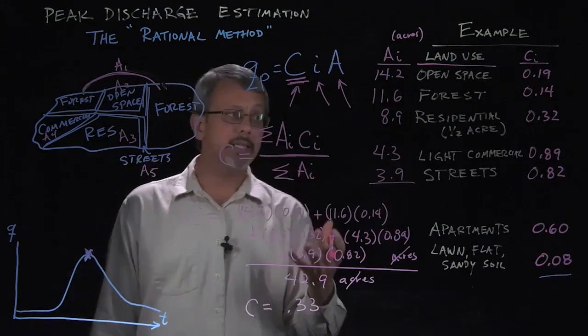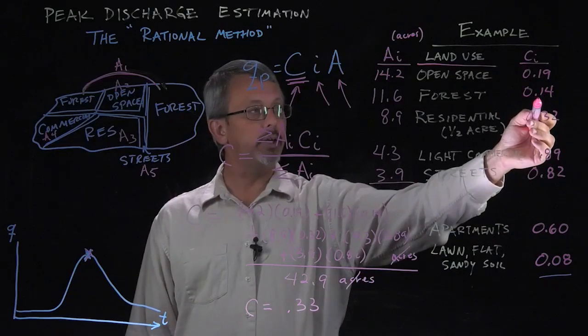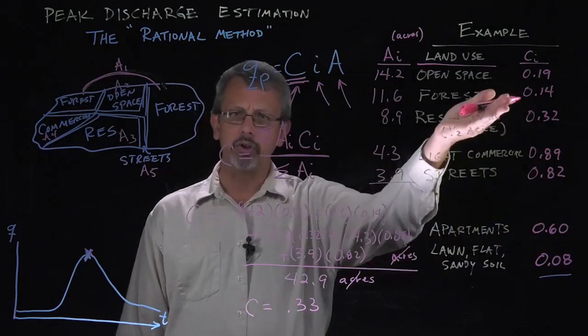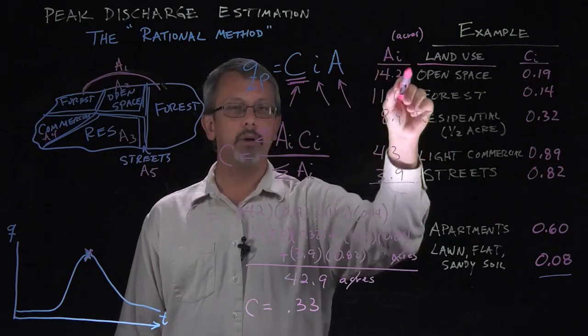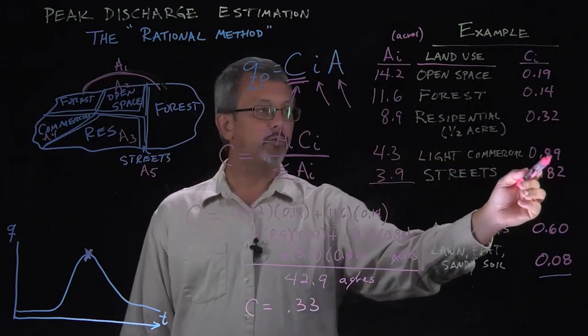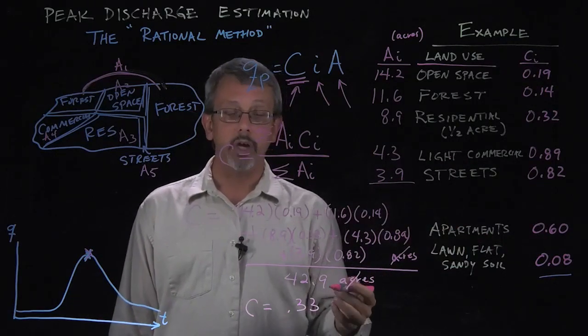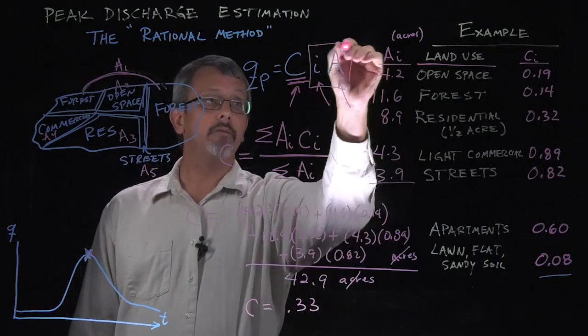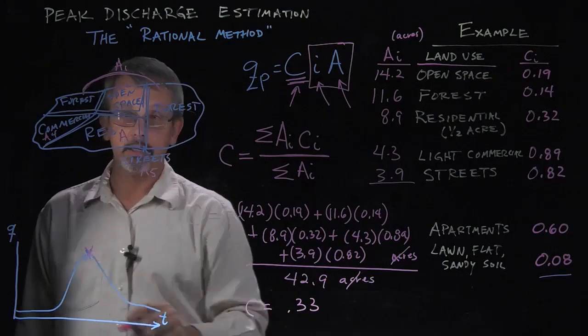Notice, just to make sure that this makes sense, we look and we see that that 0.33 is sort of in the middle here. It's definitely not the same as our low values, our lower two values here. But it does tend to be closer to our lower values than our high values here. But you'll notice that makes sense because the low values are more heavily represented in area. There is more area of open space and forest than there is of these values for light commercial and the streets, the things that are going to tend to have more of the runoff. So what this says is roughly a third of the overall volume that falls on this particular area will contribute to the peak discharge here.